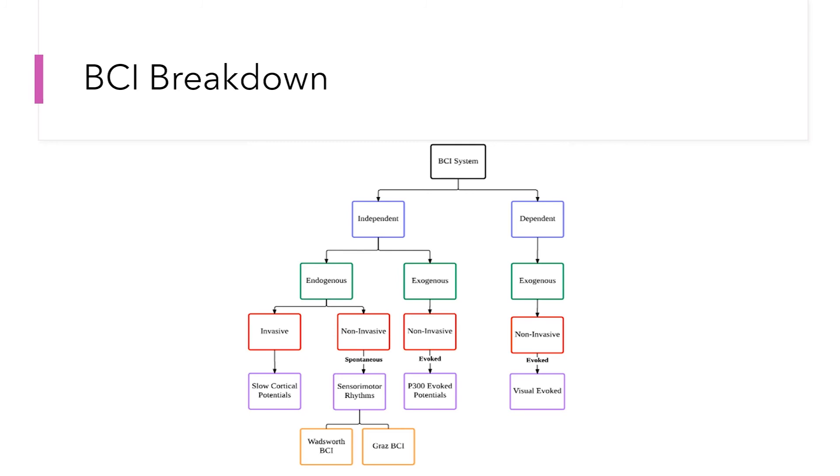Endogenous means the BCI is based only on spontaneously generated brain patterns like motor imagery. On the other hand, exogenous means the BCI is based on brain responses to external stimulus like P300. According to my findings, by definition, endogenous BCI are necessarily independent. However, exogenous BCI can be either independent or dependent.